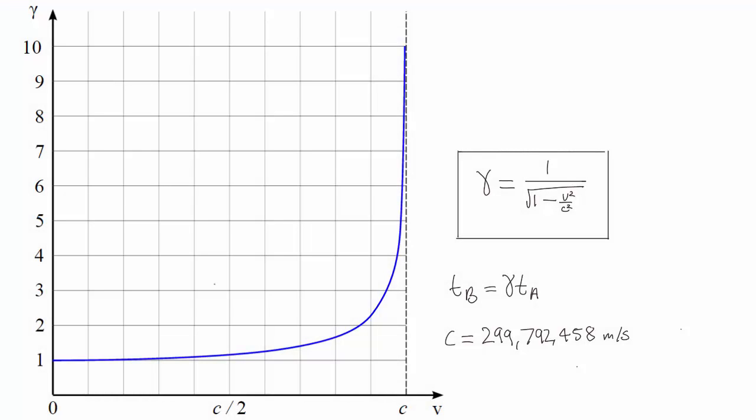So here we have a plot of gamma, where the x-axis is velocity. Gamma is also called the Lorentz factor, and in the case we just looked at, it tells us the degree of time dilation between Alice and Bob, how much slower Bob sees Alice's clock ticking.